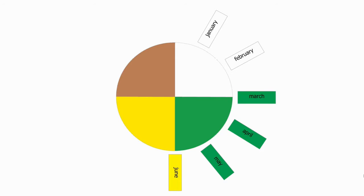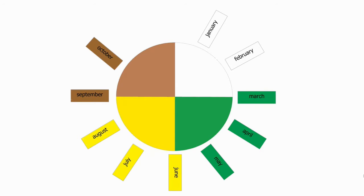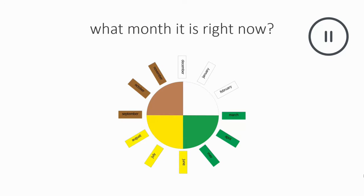June, July, August, September, October, November, December. What month do we have right now? March.